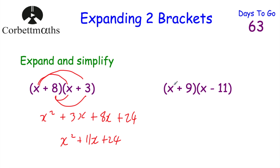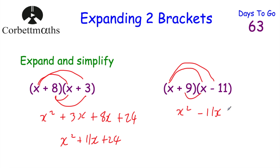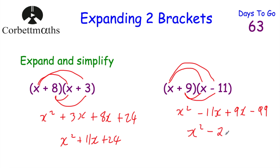Next: expand and simplify (x + 9)(x − 11). Multiply both terms by x: x squared, and x times minus 11 is minus 11x. Then 9 times x is plus 9x, and 9 times minus 11 — positive times negative is negative, 9 times 11 is 99 — so minus 99. We have x squared minus 11x plus 9x minus 99. Minus 11x plus 9x is minus 2x. The answer is x squared minus 2x minus 99.